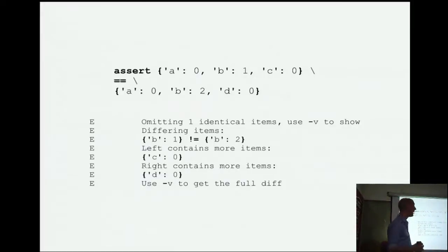And with the dictionary, so this is quite nice too. It's sort of an elaboration on the set one. So, there's one identical item, but different items, right? The key B exists in both. It's one in one and two in the other. Left contains C, right contains D. So, again, very helpful. So, context sensitive assertions.